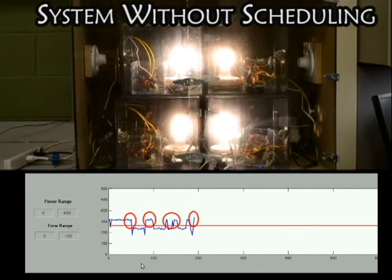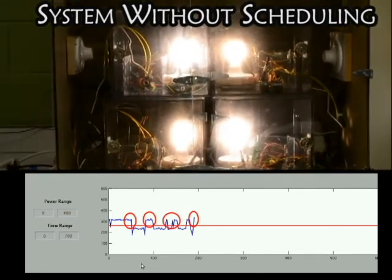When the zones operate in an uncoordinated manner, you can observe spikes in the total energy consumption.